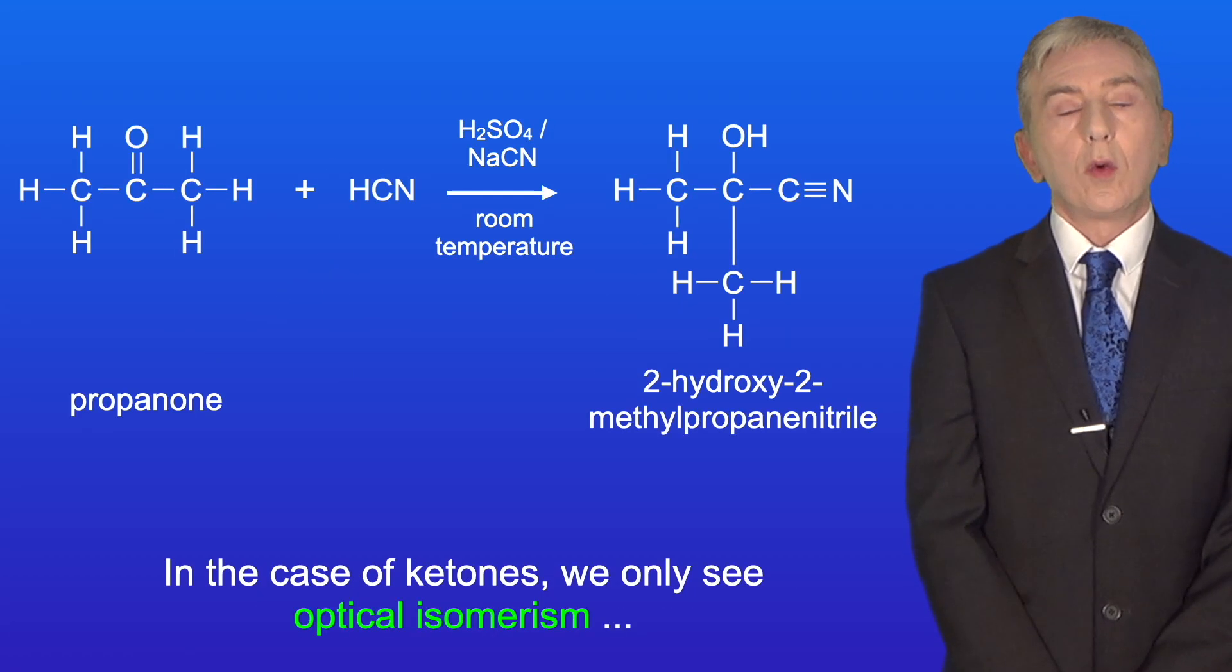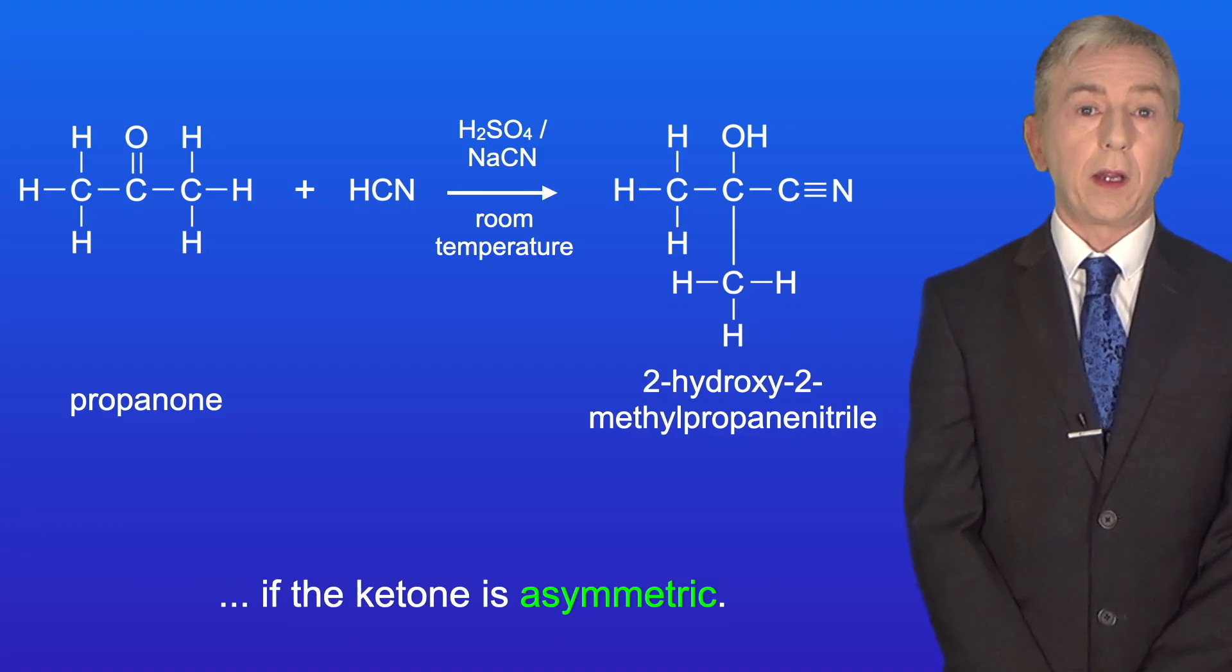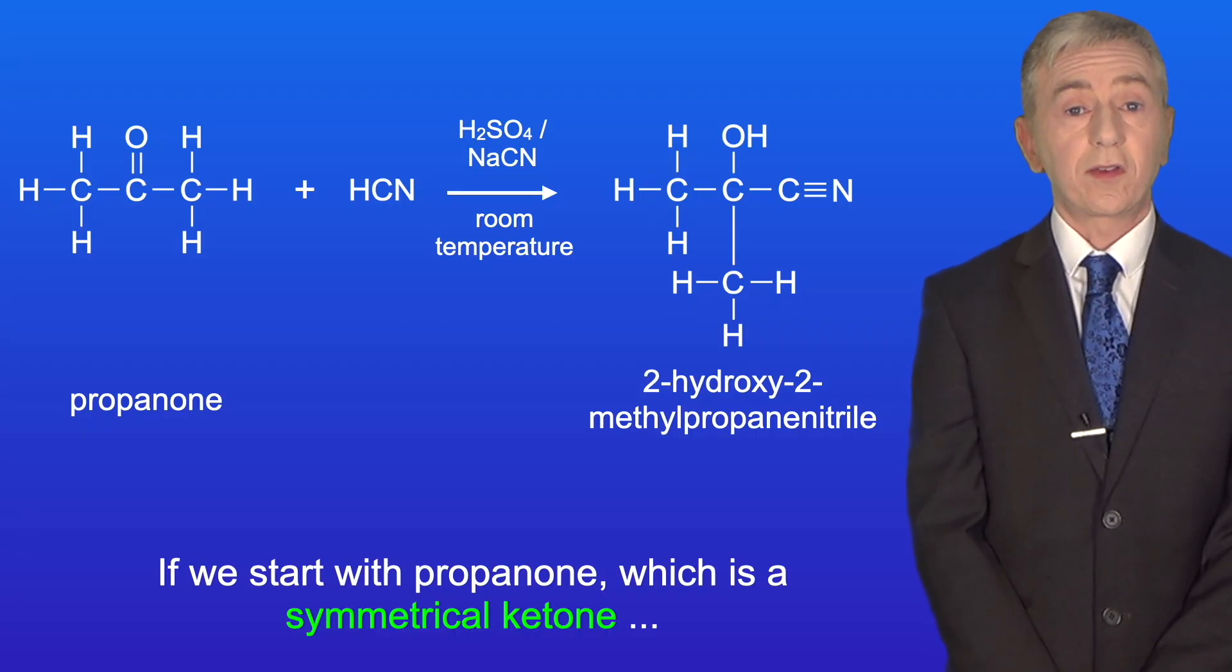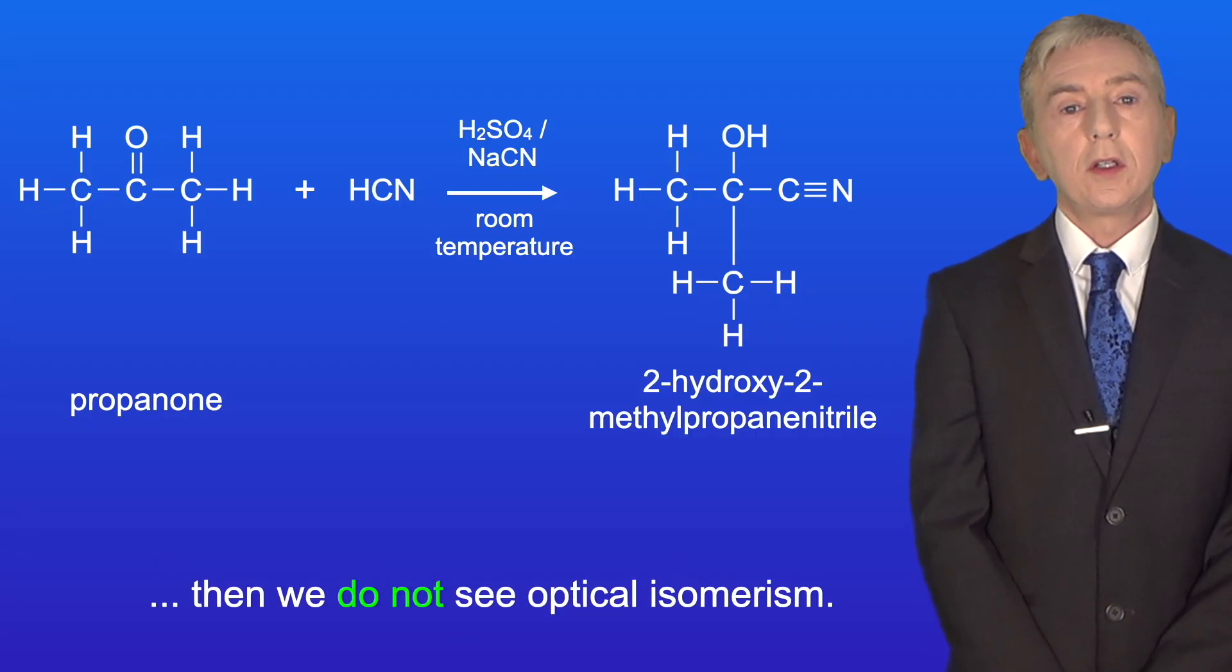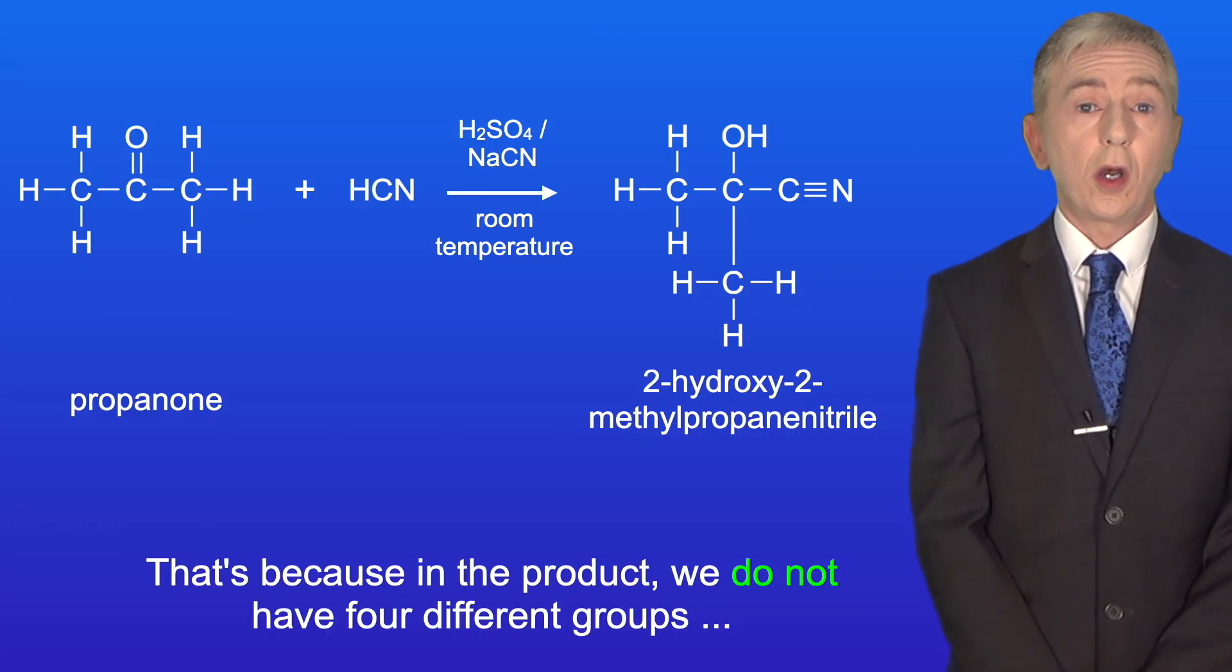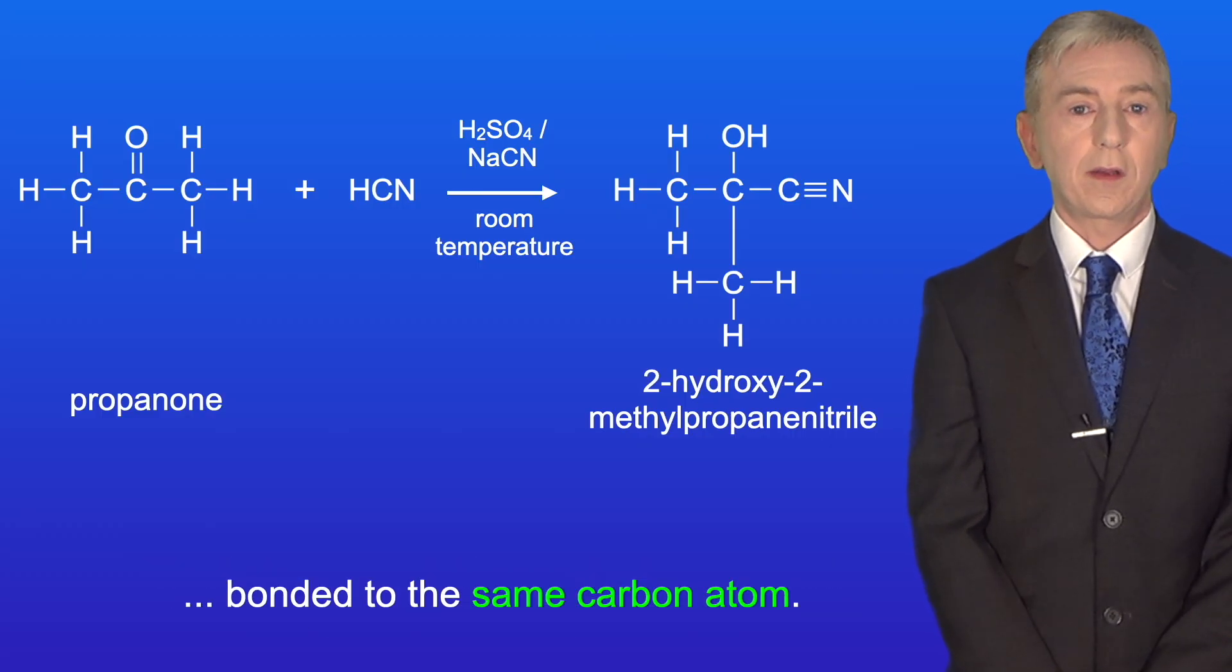Now in the case of ketones, we only see optical isomerism if the ketone is asymmetric. If we start with propanone, which is a symmetrical ketone, then we do not see optical isomerism. That's because in the product, we do not have four different groups bonded to the same carbon atom.